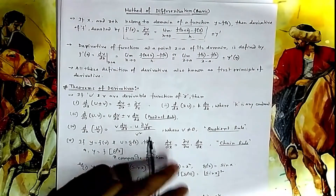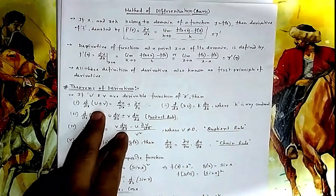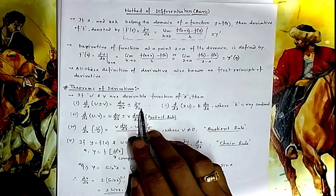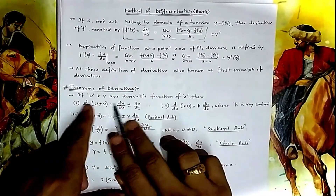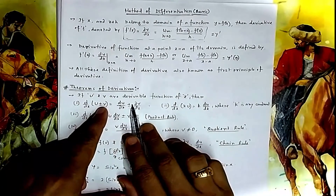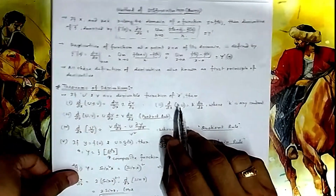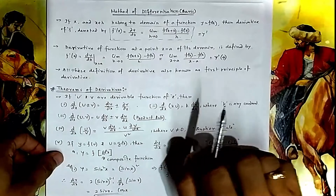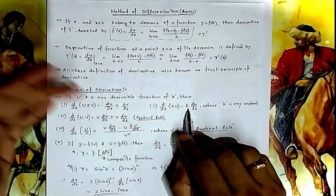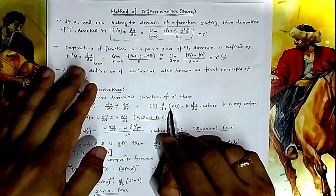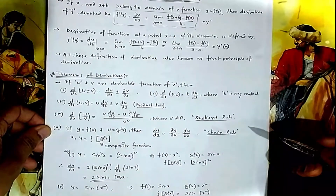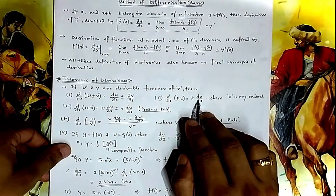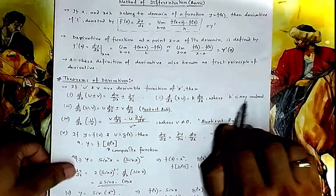Suppose u and v are two derivable functions of x. Then d/dx of (u ± v) = du/dx ± dv/dx, so you can separate the terms. Also, d/dx of (k·u) = k · du/dx, because a constant can be taken out. If x changes, there is no change in a constant, so differentiating a simple constant gives 0.